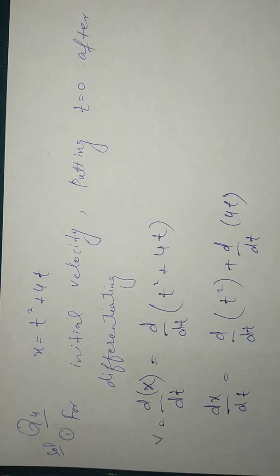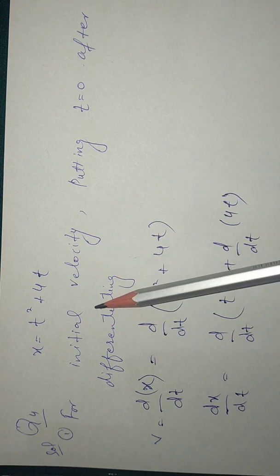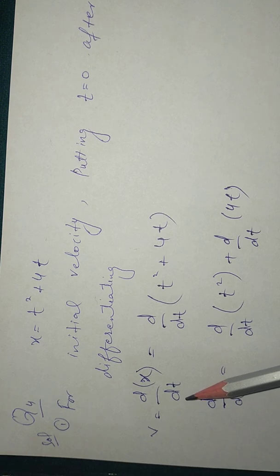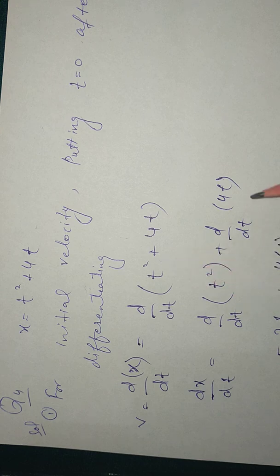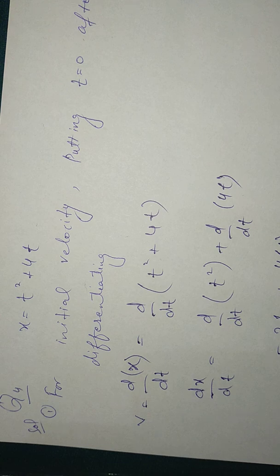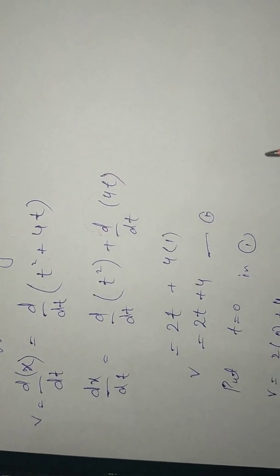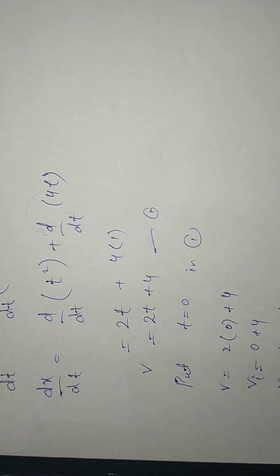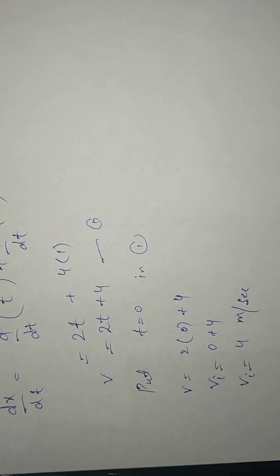Solving question number 4 of Exercise 4.1: we have x equal to t squared plus 4t. For initial velocity, we know time is 0. Applying the derivative v equal to dx by dt: derivative of t squared is 2t, and derivative of 4t — since 4 is a constant — is 4. So velocity equals 2t plus 4. Putting t equal to 0 in equation number one, initial velocity equals 4 meters per second.